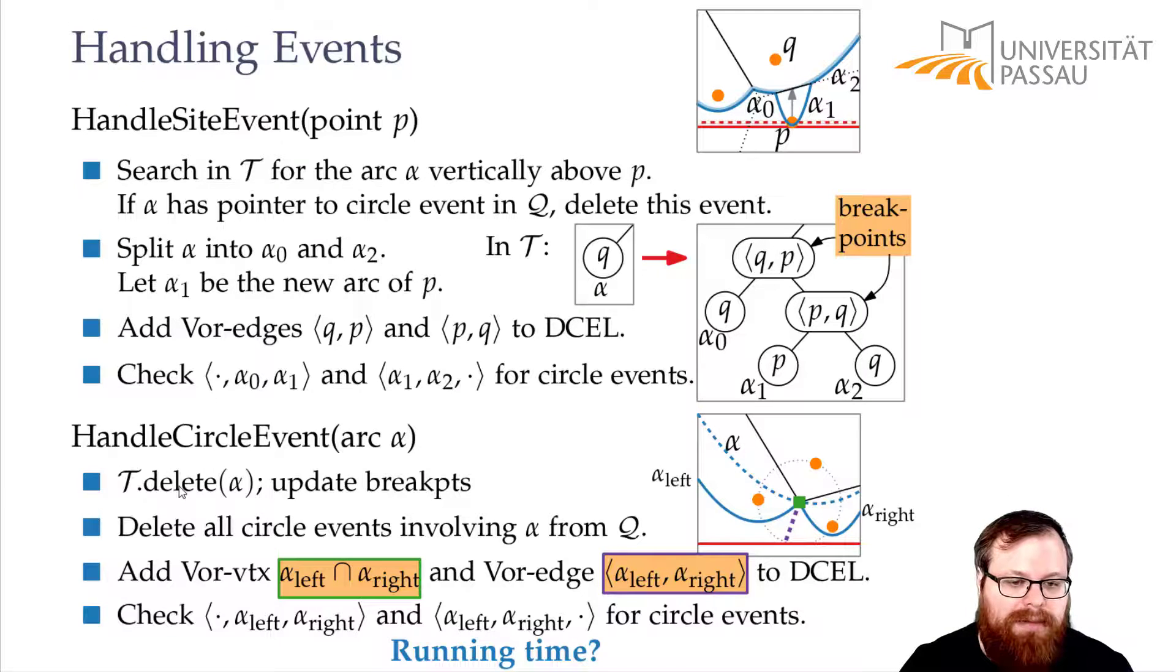About here, we delete something, we update the breakpoints, it's logarithmic time. Delete circle events. Since we have pointers, we can do this in log n time for each of them. And we add new stuff to the edge list, that's fine. We find new circle events, we insert them. So everything here can be done in logarithmic time.